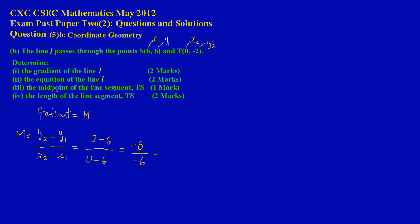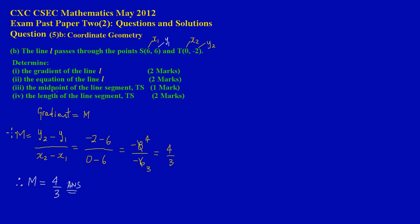The denominator is 0 minus 6 which equals -6. A negative divided by a negative gives a positive. Simplifying -8 / -6: 2 into 8 goes 4 times and 2 into 6 goes 3 times, so the answer is 4/3. Therefore, the gradient m = 4/3. That's the answer for part 1.